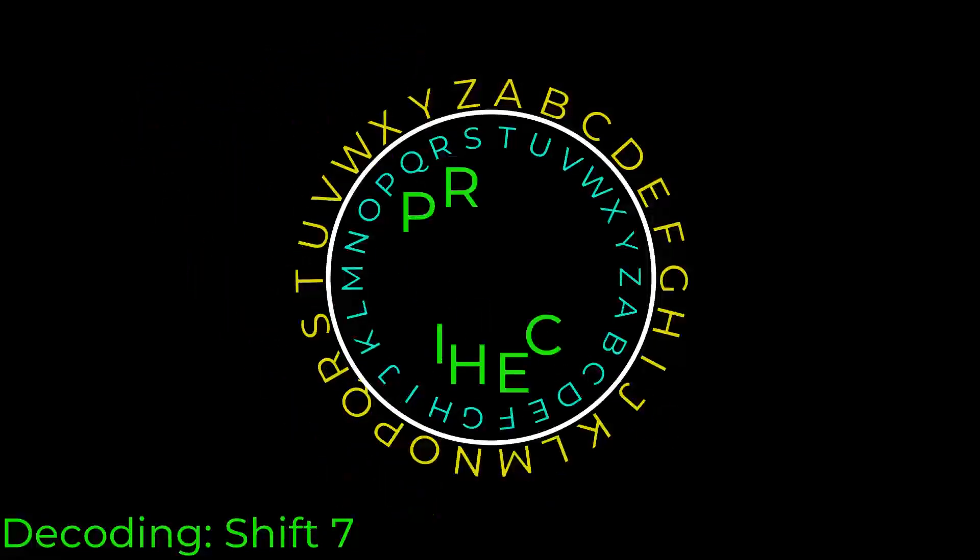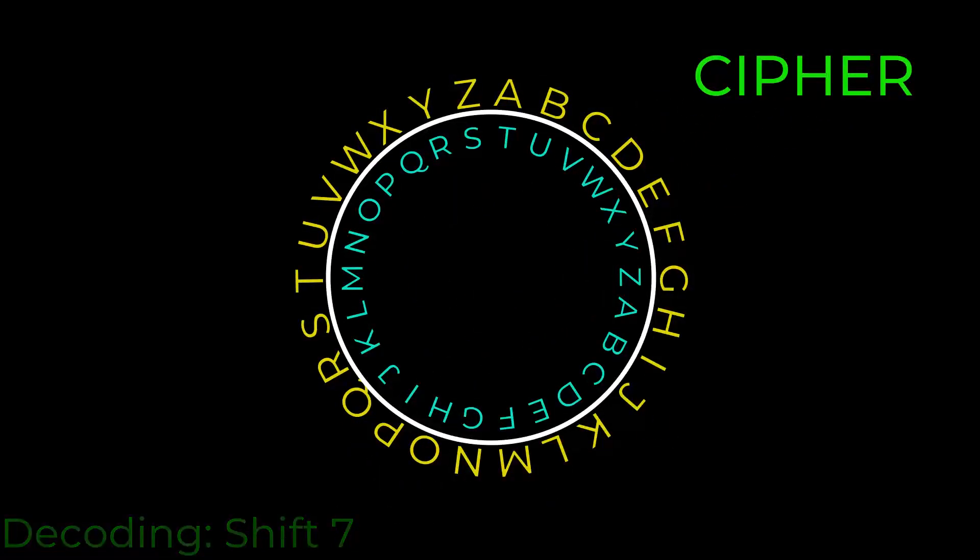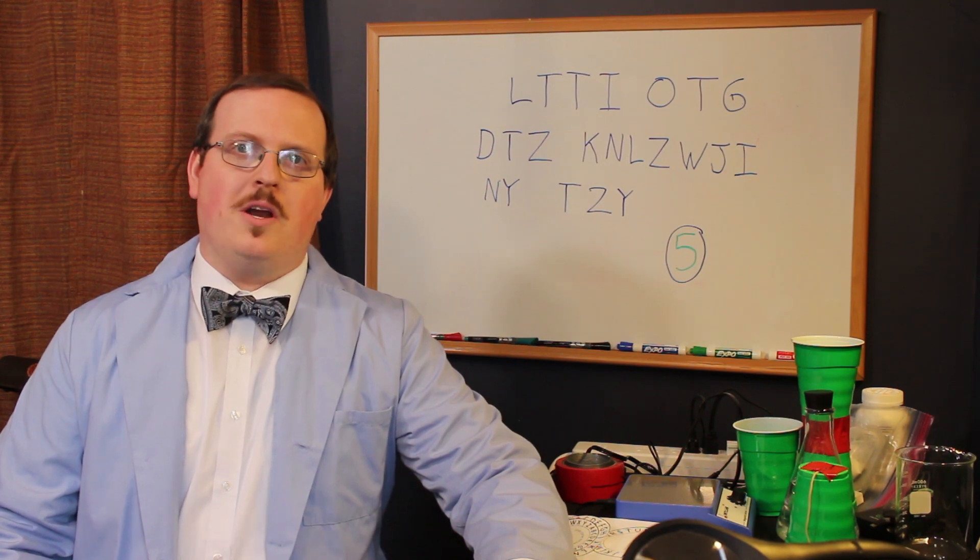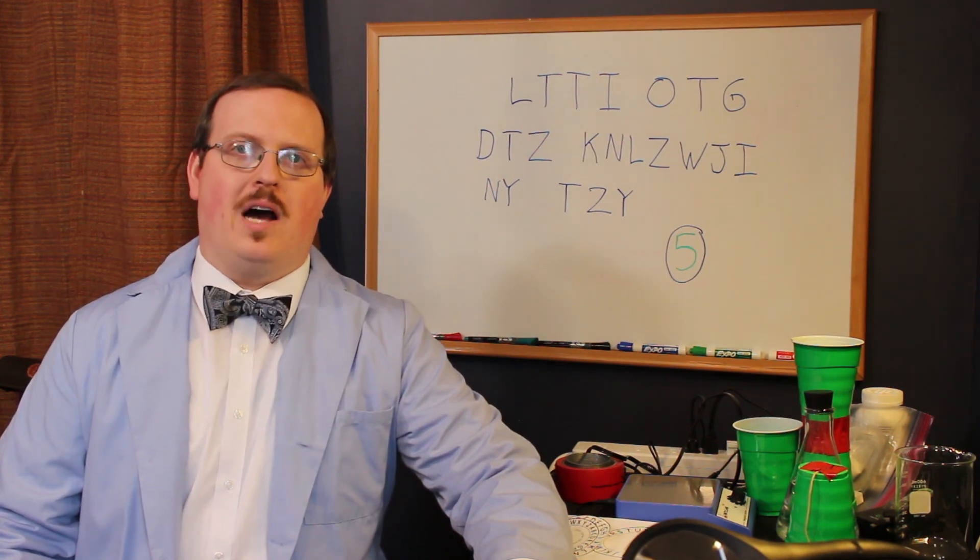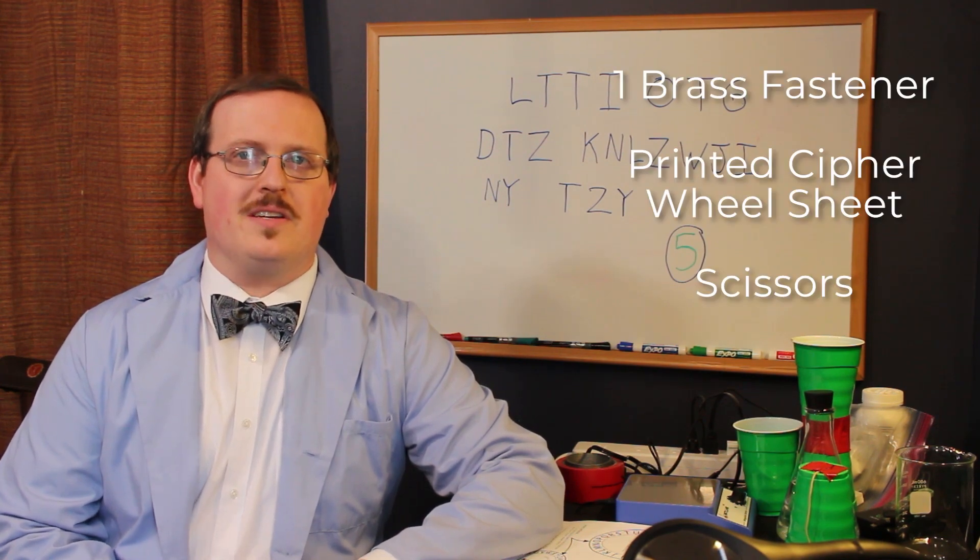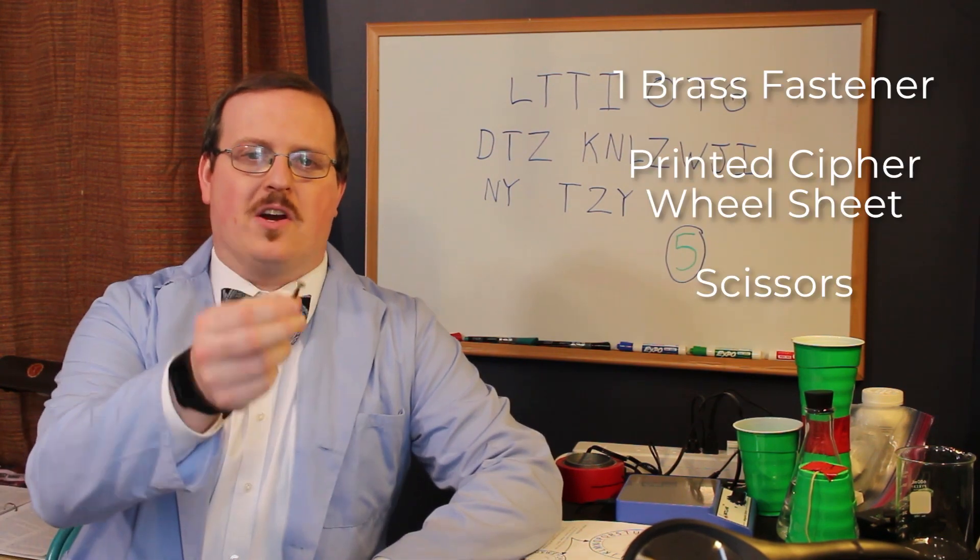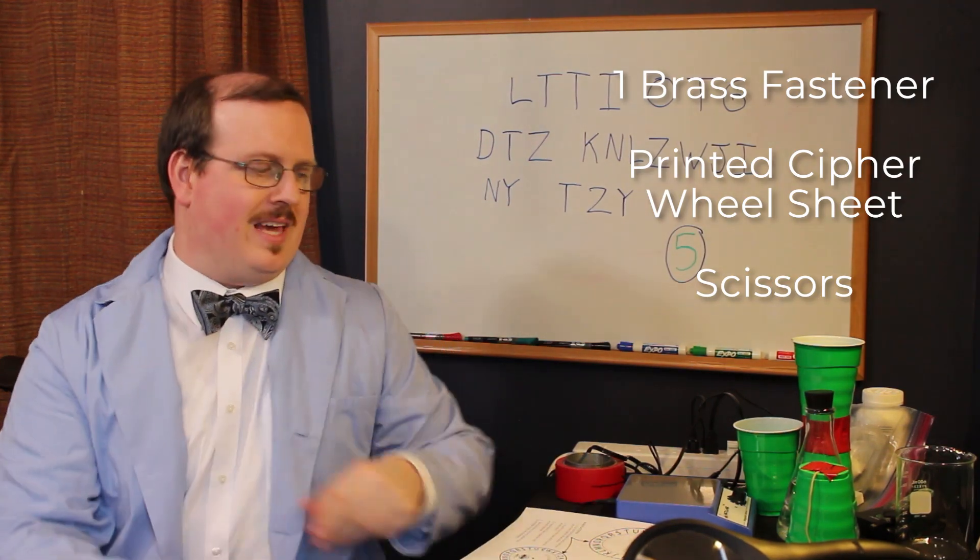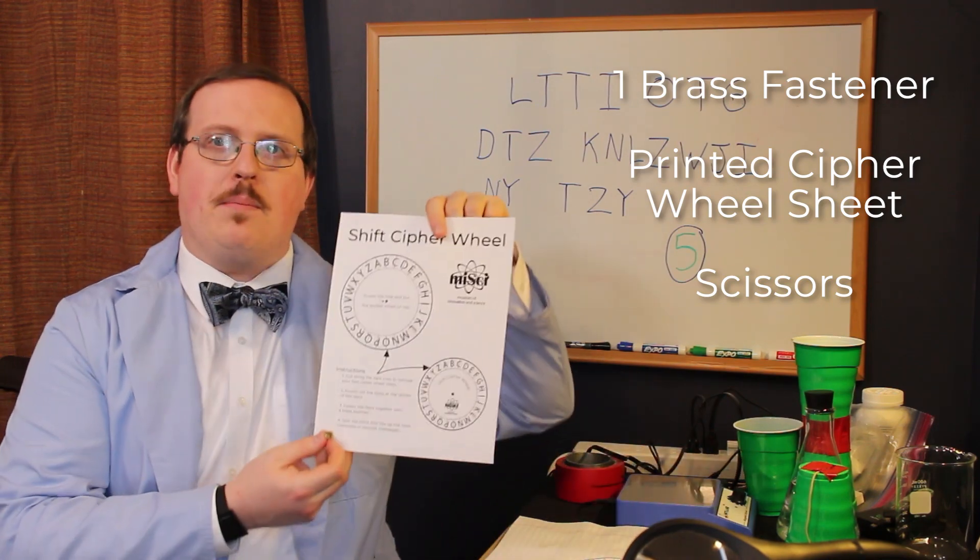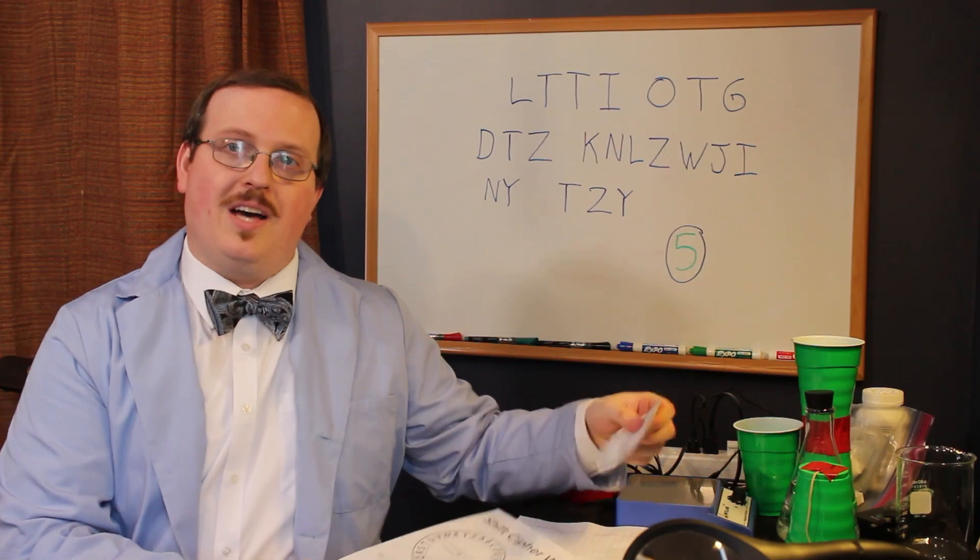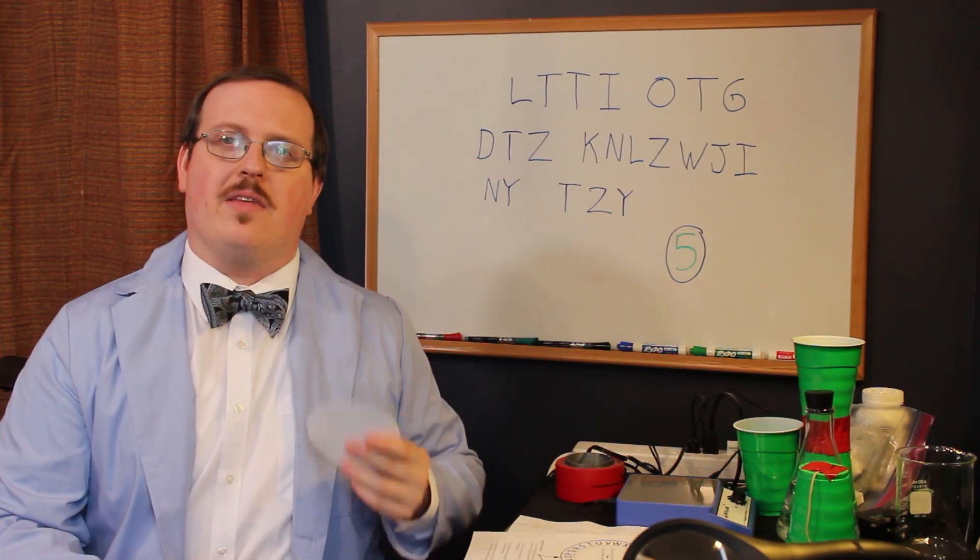So now what we're going to do is go build one. Now that we've seen how a shift cipher works, we're going to make a tool so we can make one of our own. In order to do this, you're going to need a pair of scissors, a brass fastener—it's one of those little brass things with the wings that you can use to join paper together—and you're going to need a printable cipher wheel.